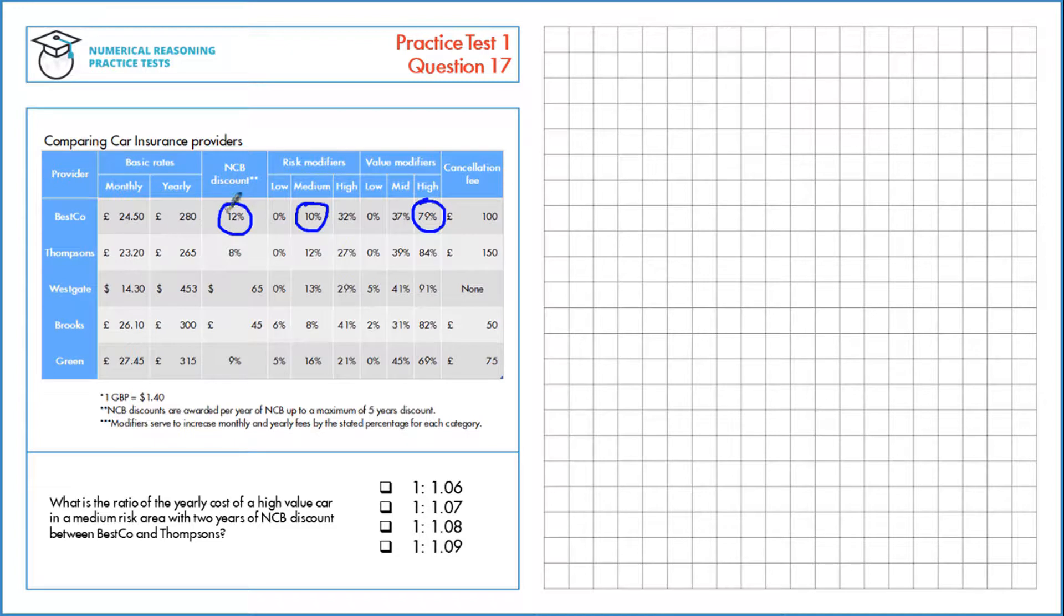The initial yearly cost is £280. We multiply by 1.1, that's a 10% increase, and 1.79, that's a 79% increase. Then we have a discount of 12%. If we take 100% and subtract 12%, we have 88%, so our discount multiplier is 0.88.